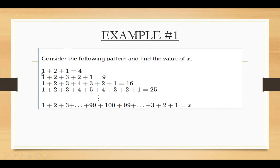In the first line, you can see 1 plus 2 plus 1 is equal to 4. So 2 is the biggest number in this first line. What you have to do is take the square of this biggest number. The square of 2 is 4. Just like that, in the second line, the biggest number on the left hand side of the equals sign is 3. The square of 3 is 9.